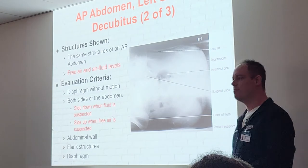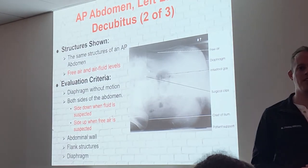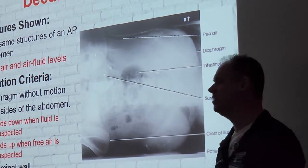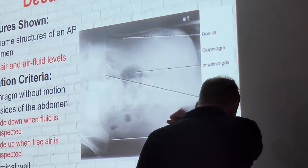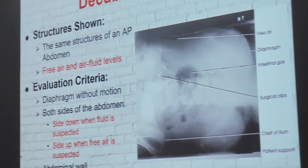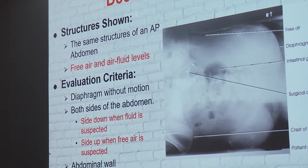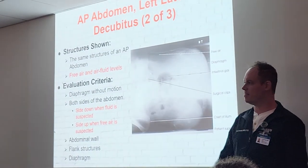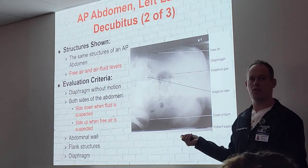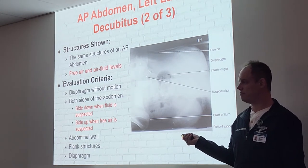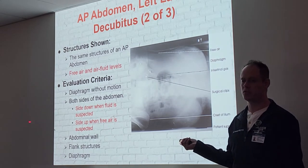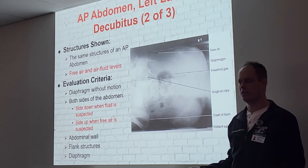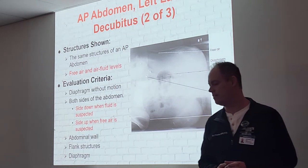We're going to see the same structures as the AP, but ideally we want to see the pathology — free air and air-fluid levels. That pathology is called pneumoperitoneum. We want the diaphragm without motion, achieved by taking the exposure on expiration. Both sides of the abdomen must be visible. Write this down and star it: we put the affected side down when fluid is suspected; we put the unaffected side down when looking for free air.